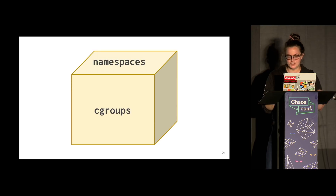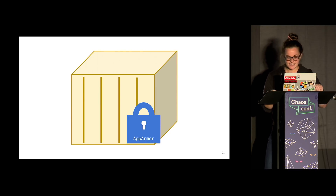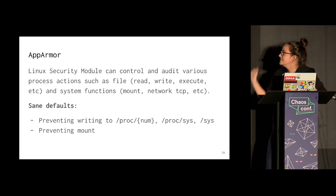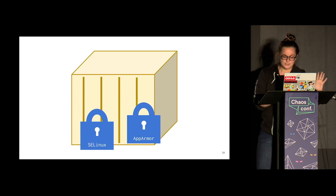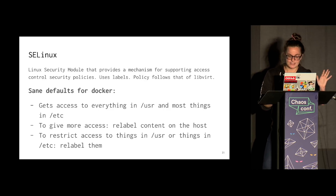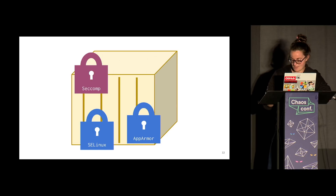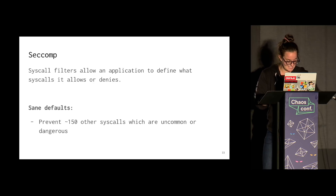On top you have all the security modules. AppArmor is one of these, and Docker has defaults you can look up. There's SELinux, another Linux security module, and we have defaults for those as well that prevent doing dumb things. We also have seccomp, which prevents running certain syscalls. That's kind of the basics of what a container is.